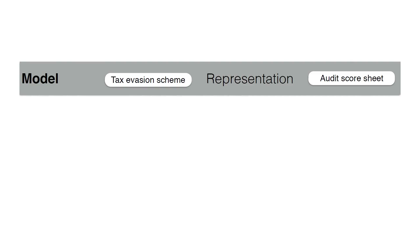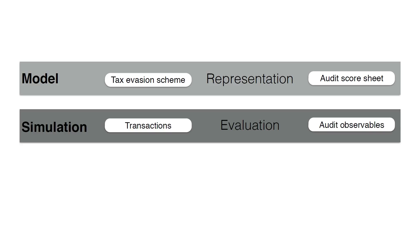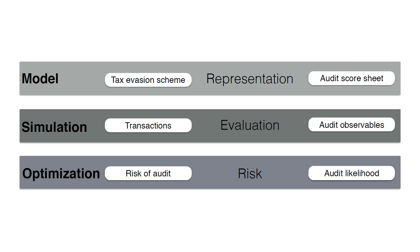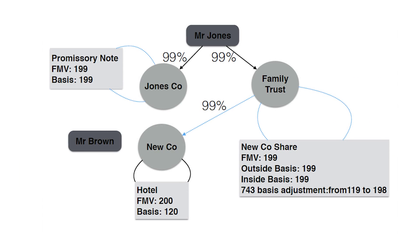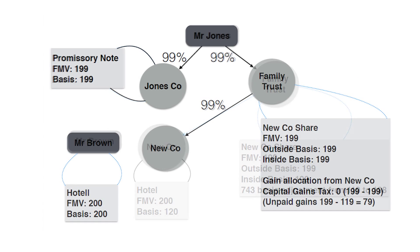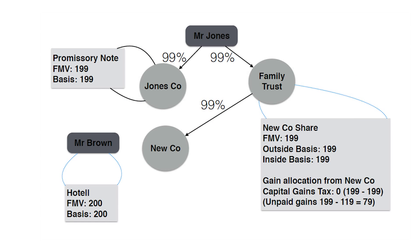One way to describe it bluntly is to say we have a calculator for tax. We use this calculator to do simulation — putting in different inputs for a transaction and seeing what the tax output is. Then we can see if we can optimize it, and that's how we find transaction sequences that pay the least amount of tax.